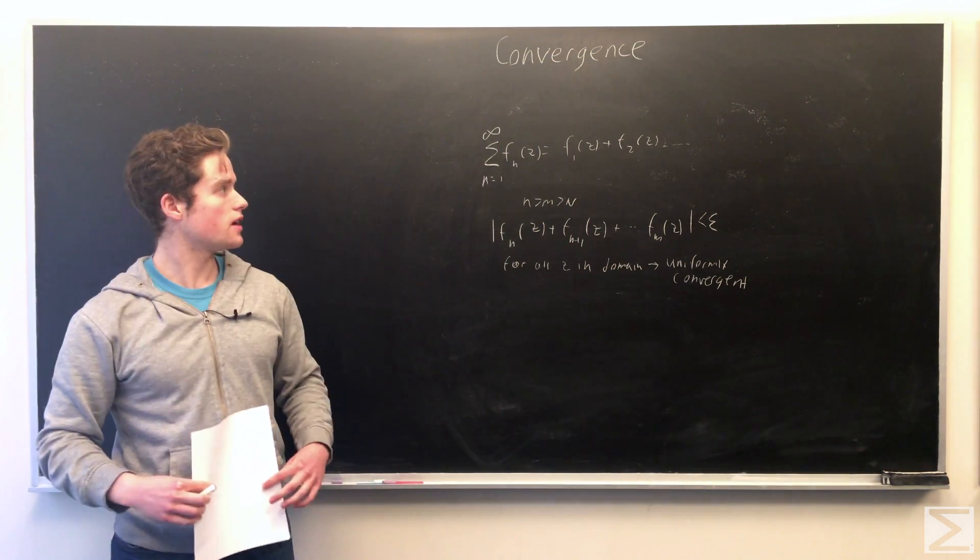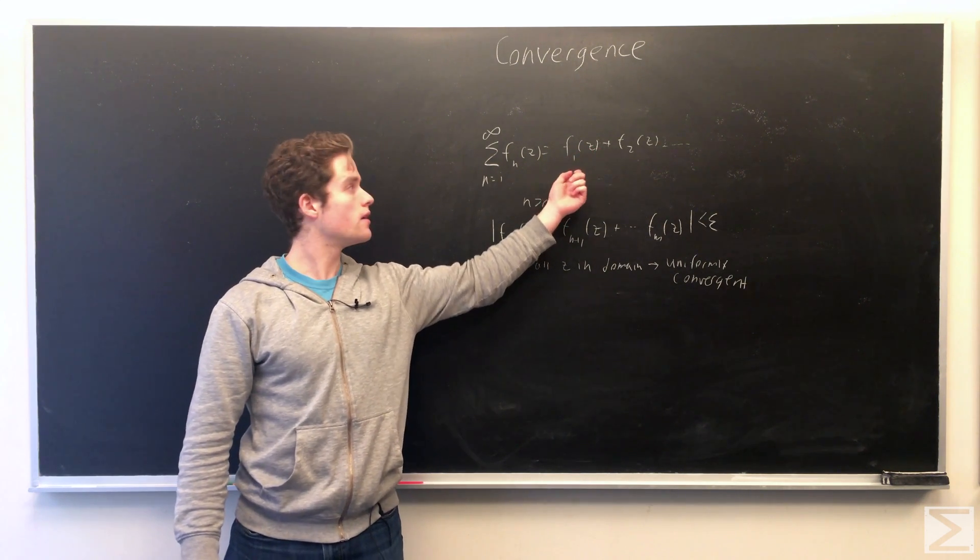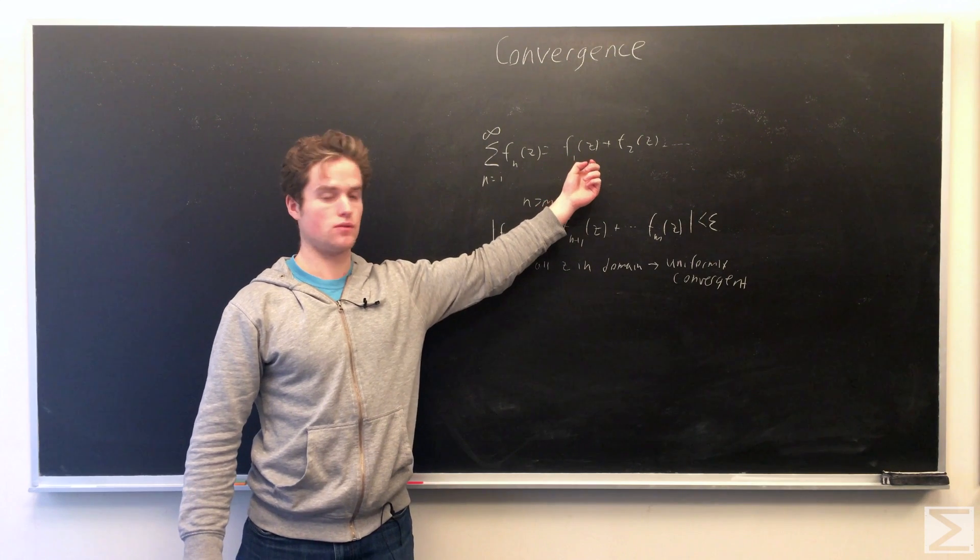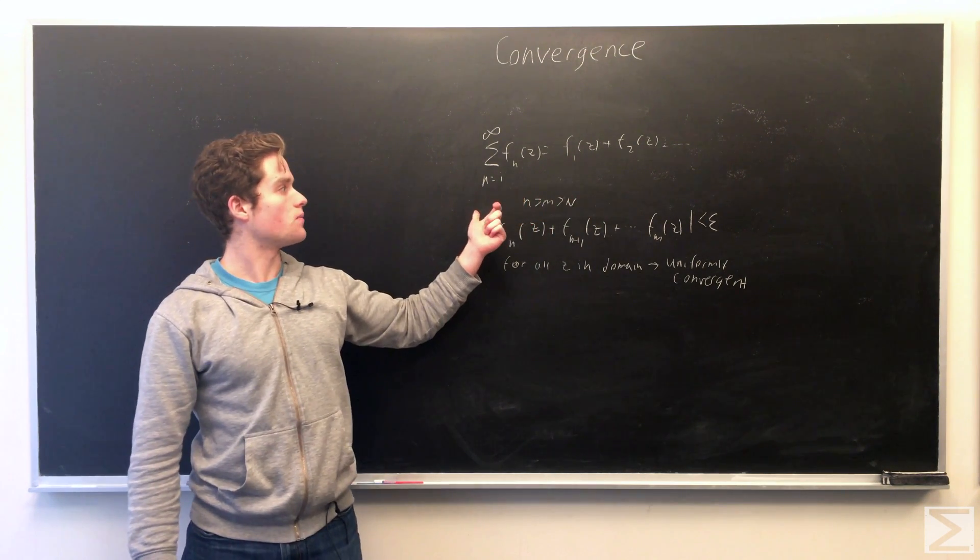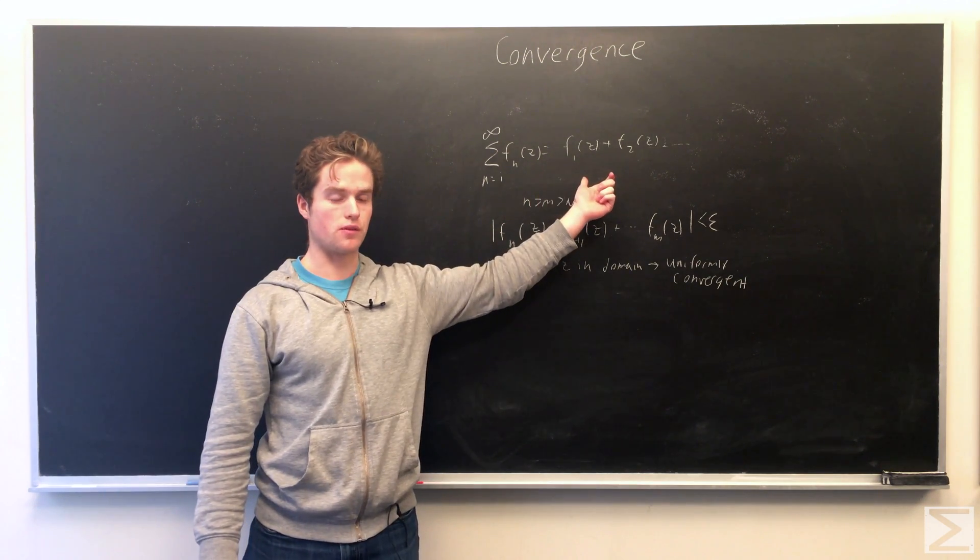So we can consider series that are sums of functions of complex variables. We have some domain that we're looking at for these functions. And so this brings up the concept of uniform convergence. We can say this series is uniformly convergent.